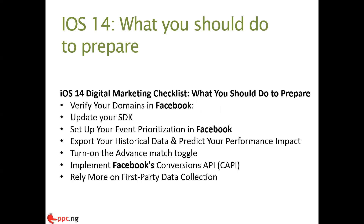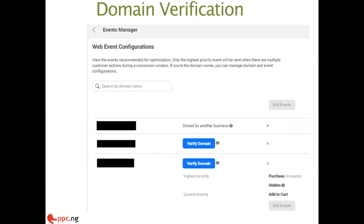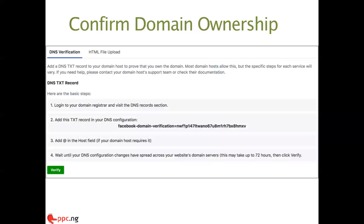Here's a pictorial view of the domain verification setup. Click on Business Settings and on the left-hand side panel, under Brand Safety, you'll see two menus: Domain and Block List. Select Domain, click Add New Domain, and you'll be prompted to verify it. There are two options: you can upload the DNS details shared when you hit the domain button, or use the HTML file upload method. For our business, we used the DNS option — I copied the TXT record and added it to our DNS verification.